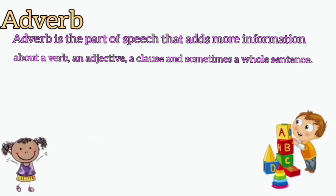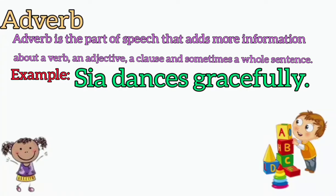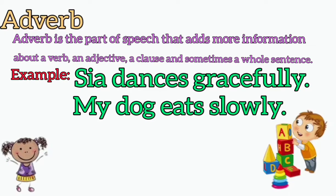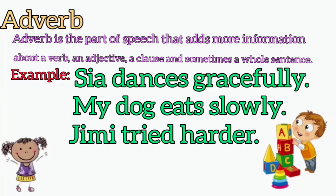The next part of speech is adverb. An adverb is that part of speech that adds more information about a verb, an adjective, a clause, and sometimes even a whole sentence. For example, 'Sia dances gracefully.' Here 'gracefully' is the adverb because it adds information about the verb 'dances.' Next example: 'My dog eats slowly.' Here 'slowly' is the adverb because it describes how the dog eats. Another example: 'Jimmy tried harder.' Here 'harder' is the adverb.